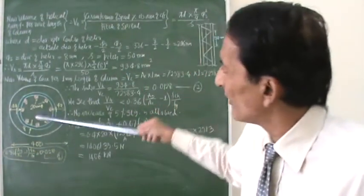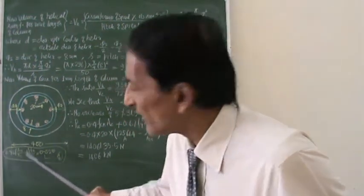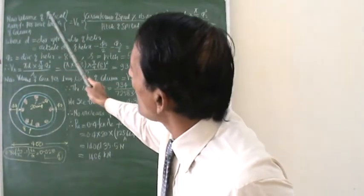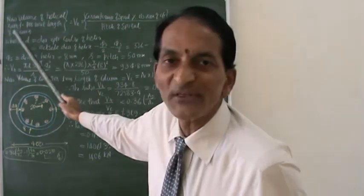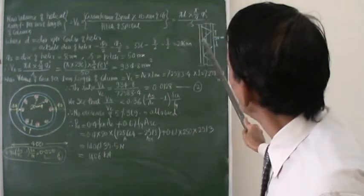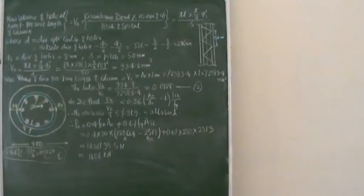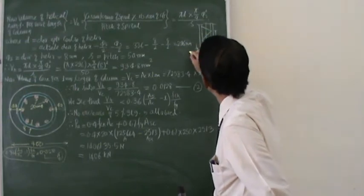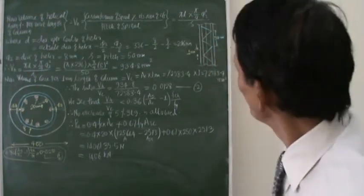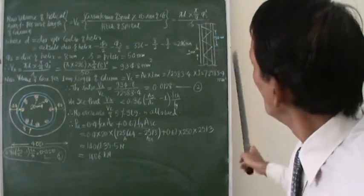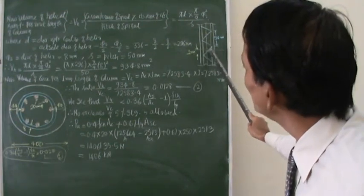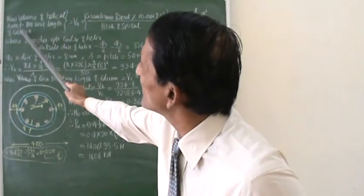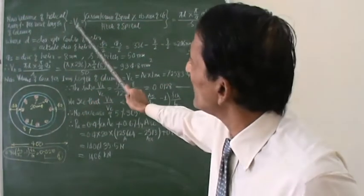So now further we shall proceed. Around this quantity I need one more quantity. I want to calculate the volume of helix reinforcement per unit length of the column. If I take 1mm length of this column, how much is the value of this helix in that 1mm length? I want to calculate this. I will call it VH.